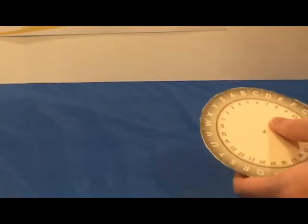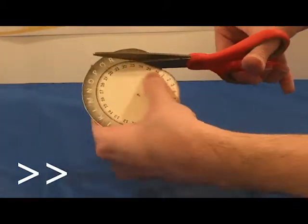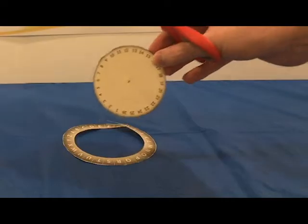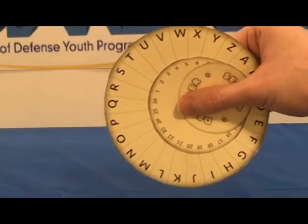The middle one has a ring of letters on it, but we won't need those, so cut those off and leave only the numbers. Your three rings should look like this.